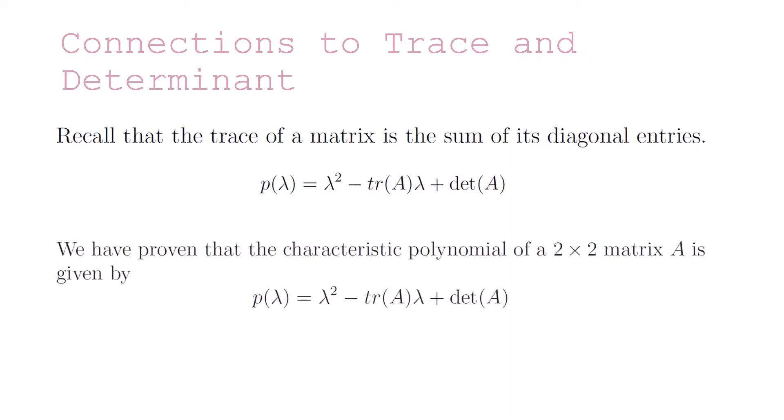We have proven that the characteristic polynomial of a 2x2 matrix A is given by P of lambda equals lambda squared minus the trace of A times lambda plus the determinant of A.